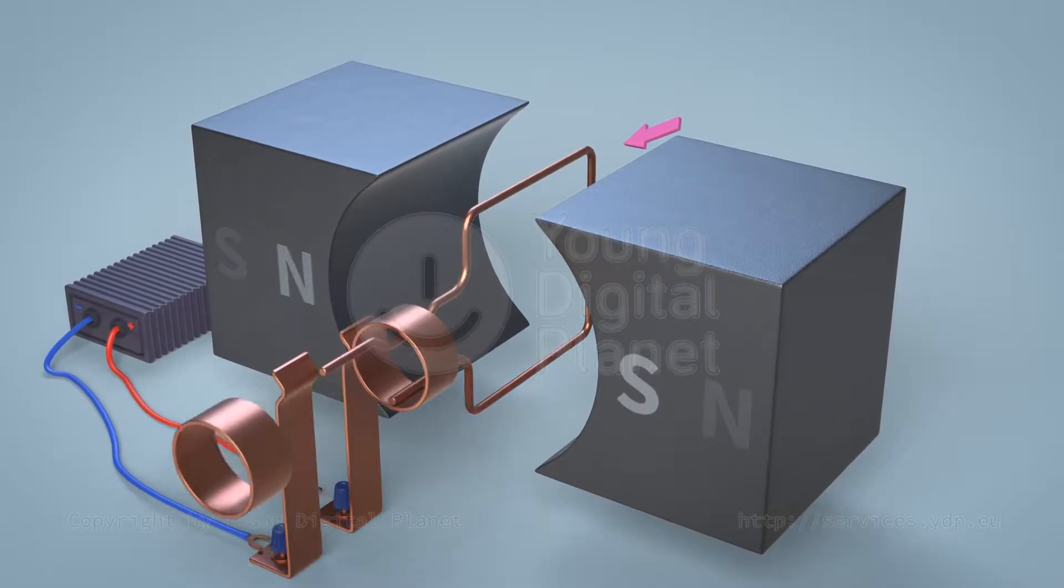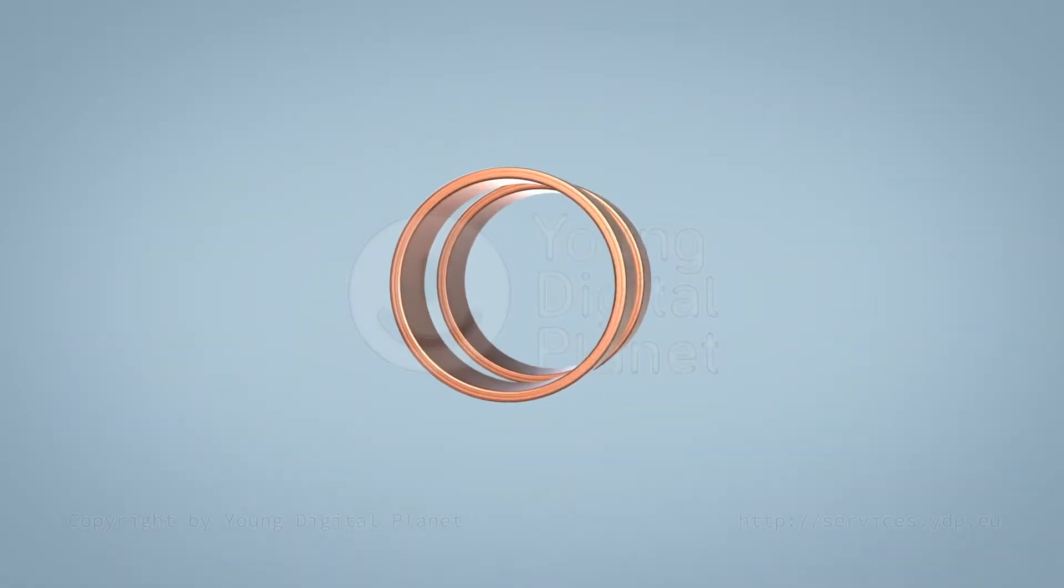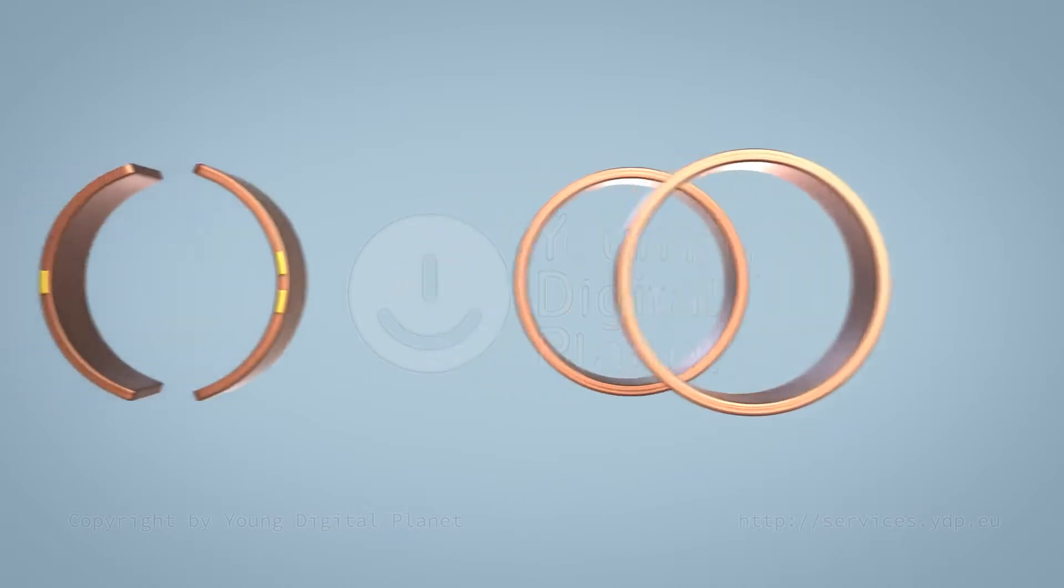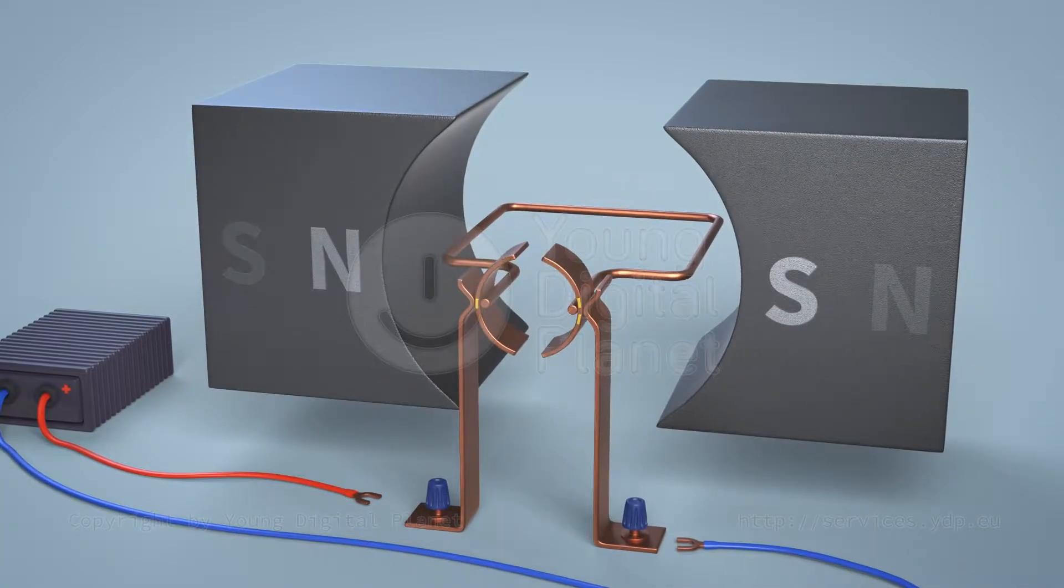To make the frame rotate, it is necessary to replace the rings with two separate segments attached to the frame ends. This is what is known as the commutator.